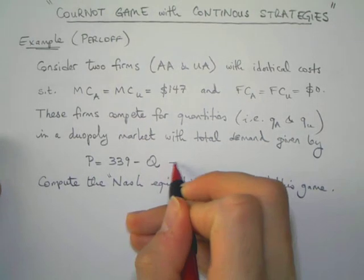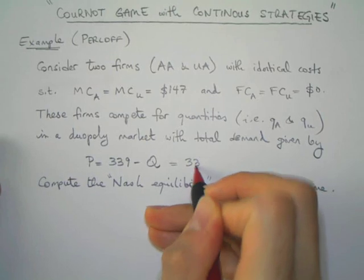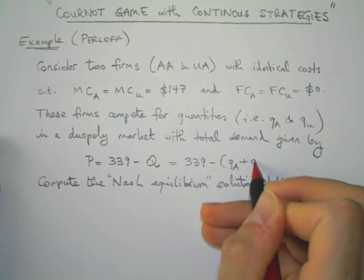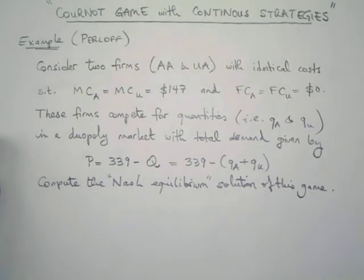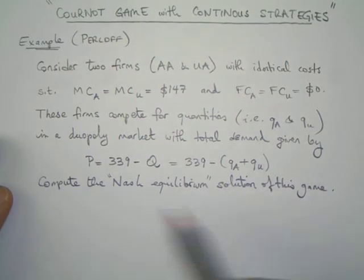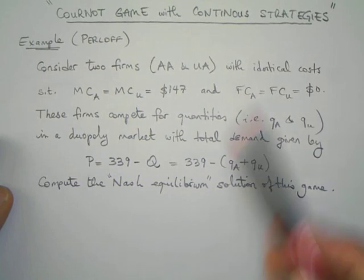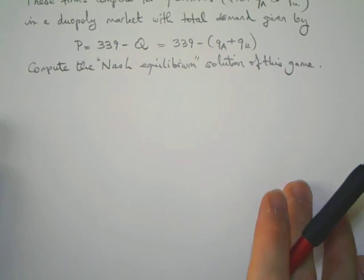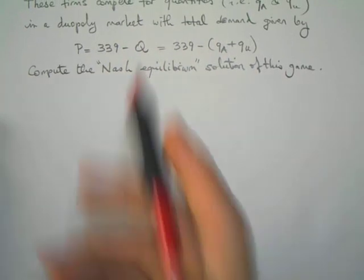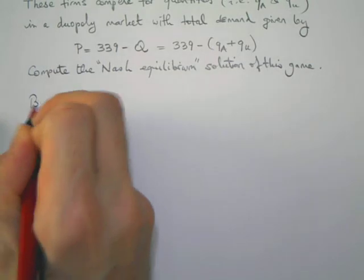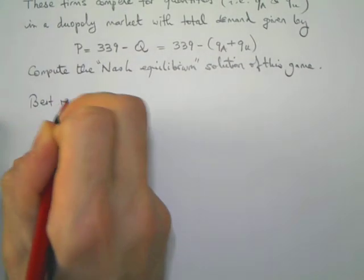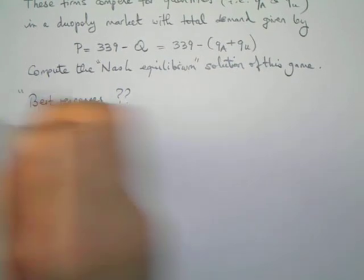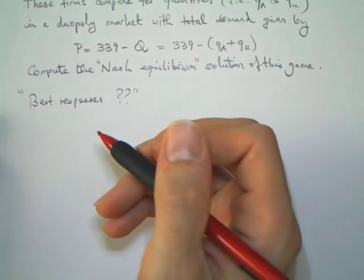The total demand curve is given by P equals 339 minus Q. We can rewrite this equation, where Q is the total output. We need to compute the Nash equilibrium solution of this Cournot game. The simplest way to find the Nash equilibrium is to look at the best responses.